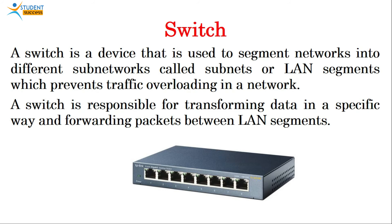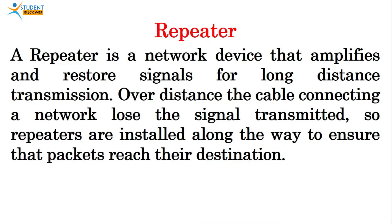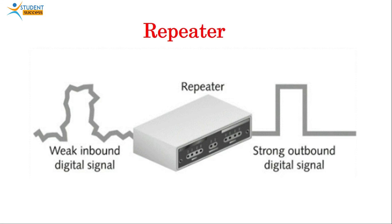Next is switch. A switch is a device used to segment networks into different sub-networks called subnets or LAN segments, which prevents traffic overloading. The main purpose of a switch is to control traffic over the network. A switch transforms data in a specific way and forwards packets between LAN segments. Next is repeater. A repeater is a network device that amplifies and restores signals for long-distance transmission. Over distance, the cable connecting a network loses its signal, so repeaters are installed along the way to ensure that packets reach their destination.